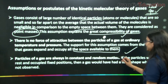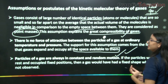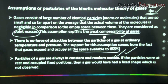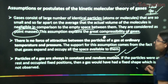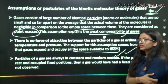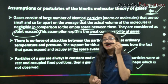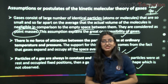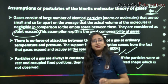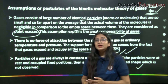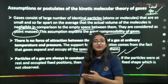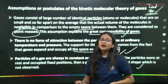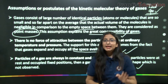Postulate 3: Particles of a gas are always in constant and random motion. If particles were at rest in fixed positions, a gas would have a fixed shape, which is not observed. This is why when you spray deodorant in one corner of a room, the gas molecules in constant random motion carry the fragrance to every other corner after some time.